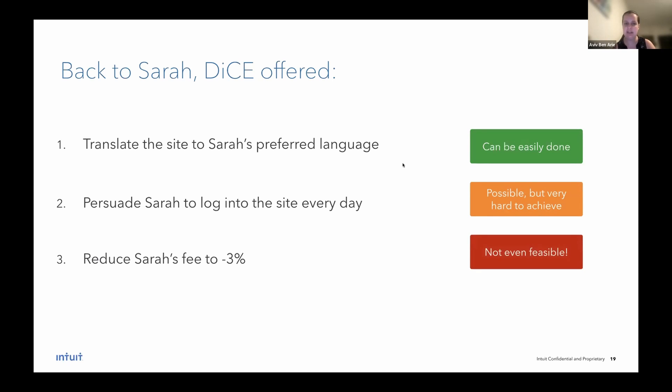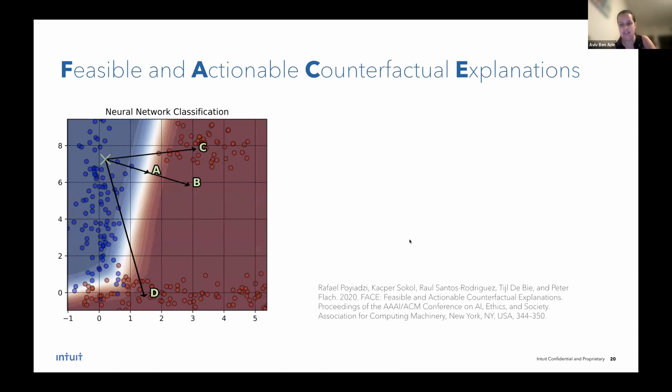So now the next step, after we learn how to generate counterfactuals, generate multiple diverse counterfactuals, is to address this problem, the problem of feasibility. Luckily, the same year, another paper was published called feasible and actionable counterfactual explanations or FACE for short. And FACE introduces a novel concept, which I'll explain through this image on the left.